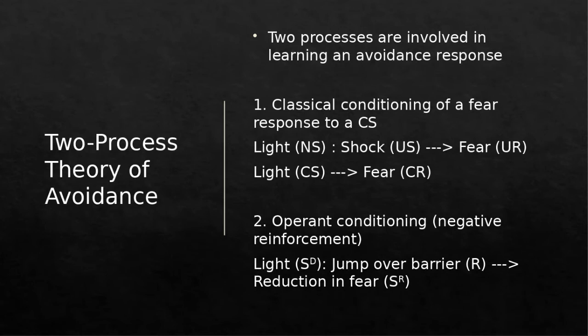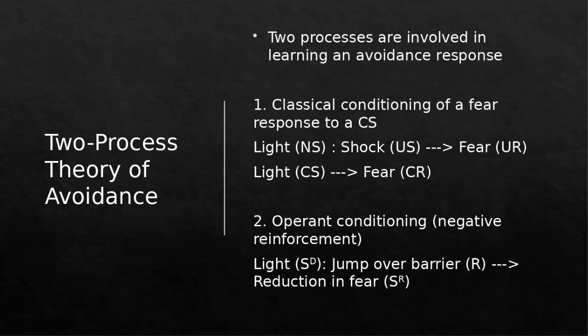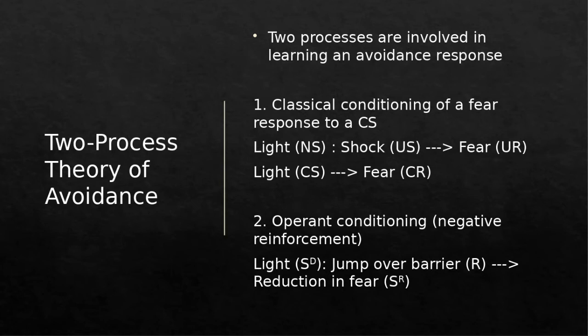The first theory used to explain avoidance is the two-process theory of avoidance, which says there are two processes involved in learning an avoidance response. The first is the classical conditioning of a fear response to a CS. Using the mouse in the Skinner box: the light is a neutral stimulus paired with the unconditioned stimulus of shock, which causes the unconditioned response of fear in the mouse. Eventually, the light becomes a conditioned stimulus that leads to the conditioned response of fear — the mouse has learned to fear the light.